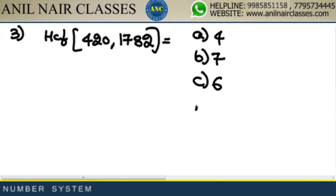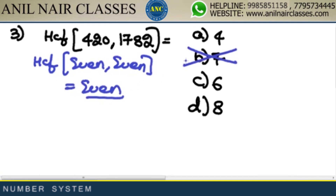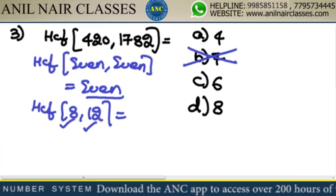Listen carefully to every point. HCF of 420 and 1782. 420 is an even number, 1782 is an even number. The HCF of two even numbers is always even — so the answer cannot be 7. That option is eliminated.